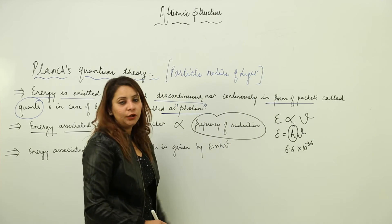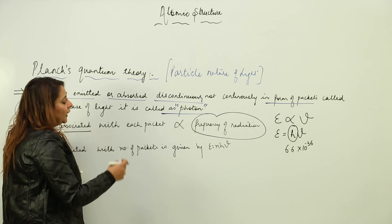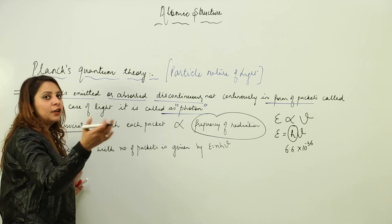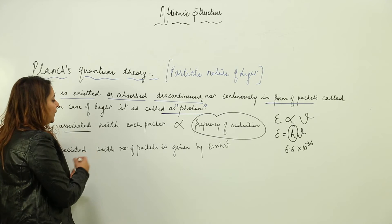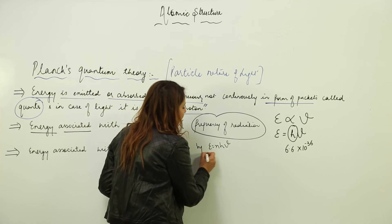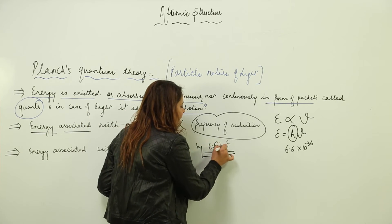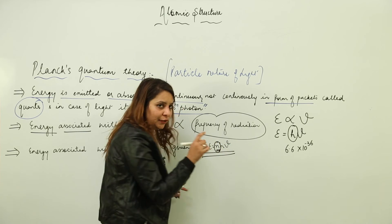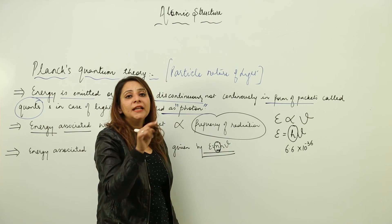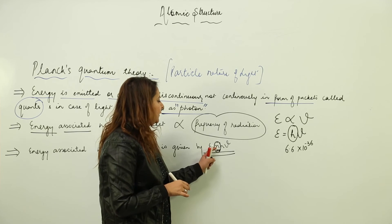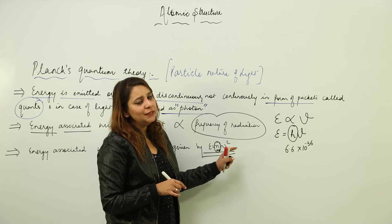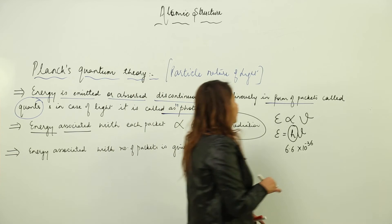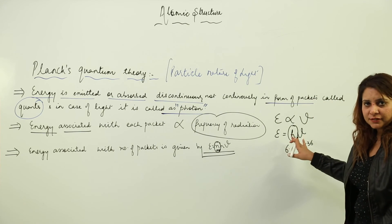So E = hν. Now if 3 or 4 or 10 packets fall on the surface, then the energy associated with each is given by E = nhν. You need to multiply the hν by number of packets, so you can say it is an integral multiple of h and ν.